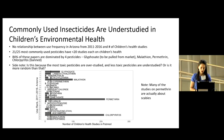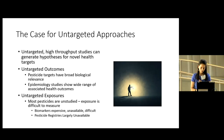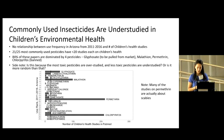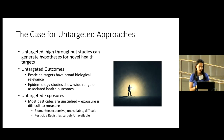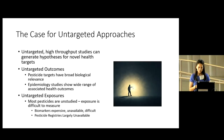One way we can cover the gap in the non-existent literature is to use what's called an untargeted approach to study them all simultaneously. Untargeted high-throughput studies are often used in laboratory environments and can generate hypotheses for novel health targets or novel health exposures. I'm proposing to use them with existing big data — and today I'm going to be talking about untargeted exposures.